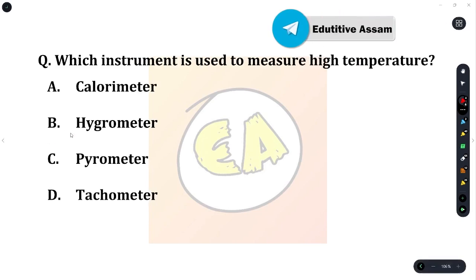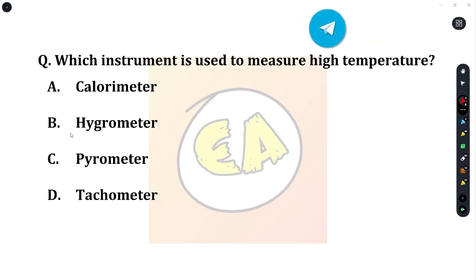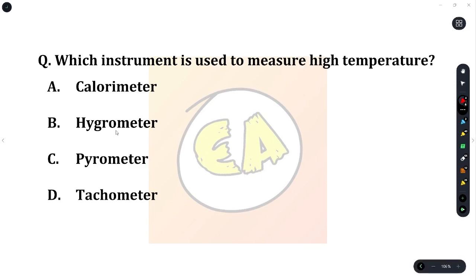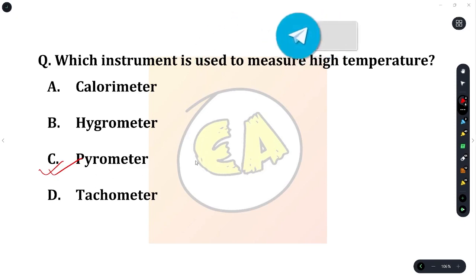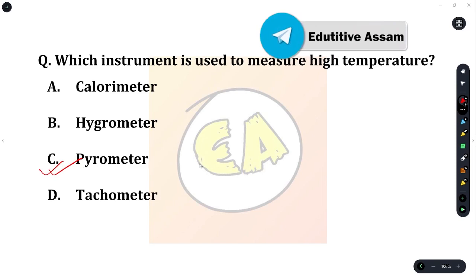Next question: which instrument is used to measure high temperature? Option A: calorimeter. Option B: hygrometer. Option C: pyrometer. Option D: tachometer. The correct answer is pyrometer. A pyrometer is used to measure high temperature, while a thermometer is used for low temperature.